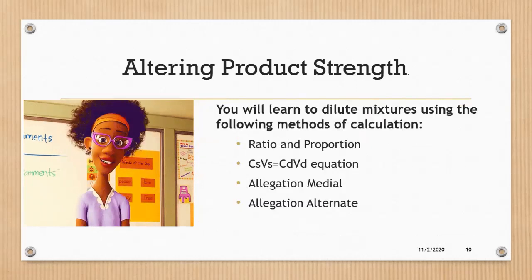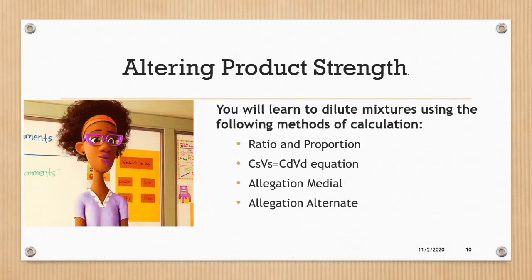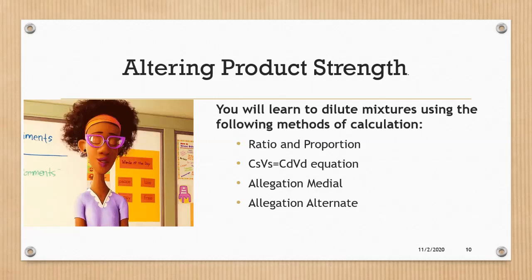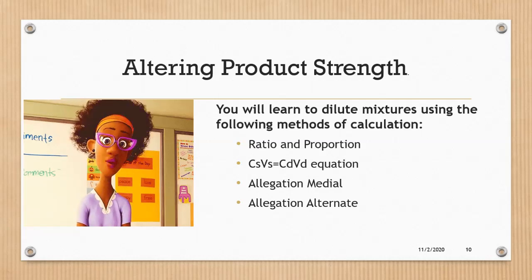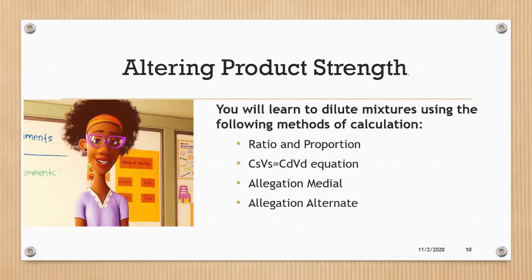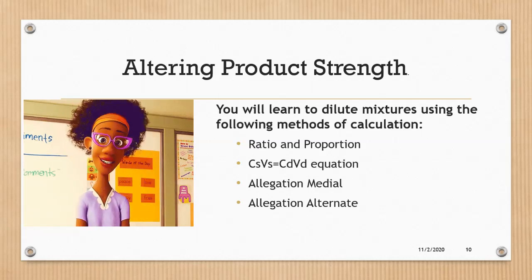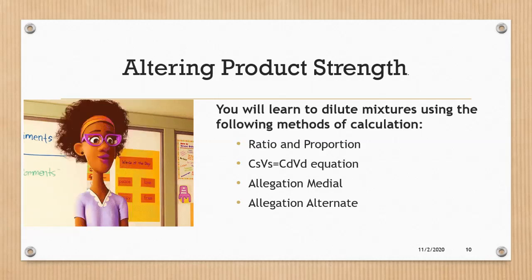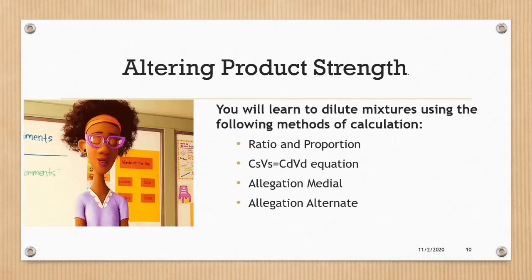When diluting or altering concentrations, we can use ratio and proportion, the C1V1=C2V2 equation, allegation medial, or allegation alternate. We'll begin with the ratio and proportion concept.